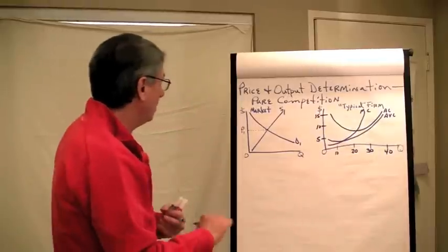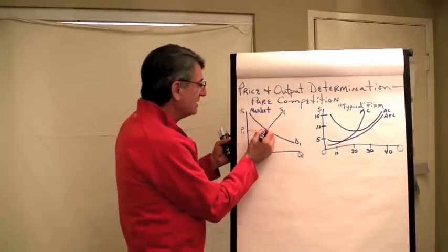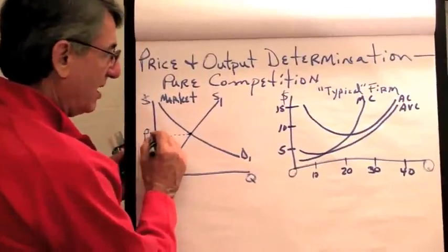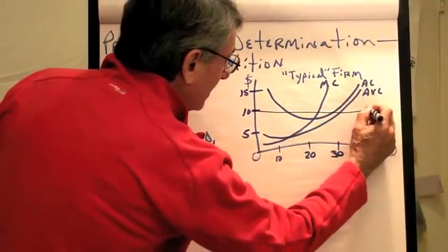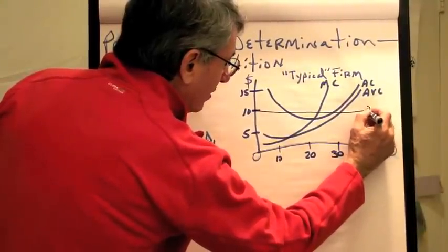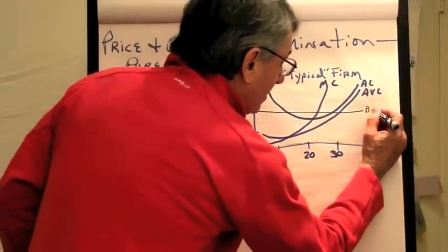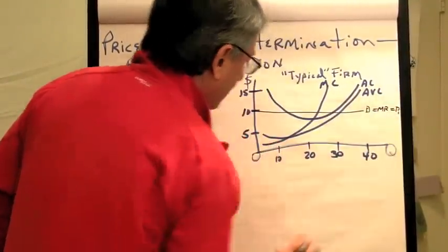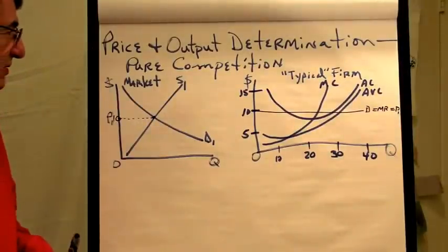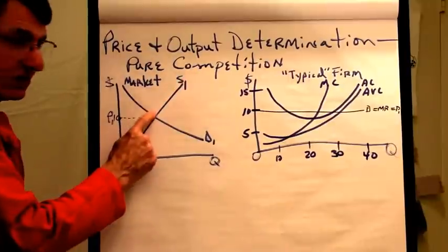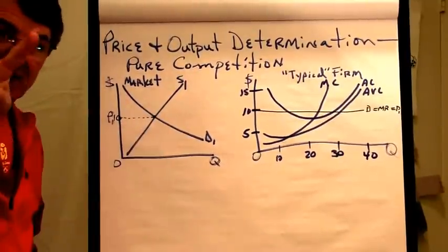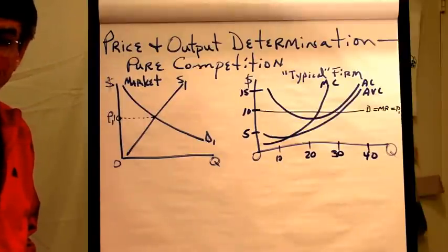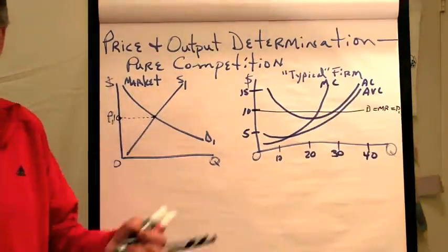Once the market has decided that the price is P1 — let's say this price is $10 — then this becomes the demand curve to each firm in this industry. It's also the marginal revenue curve, and it's price. Each firm in a purely competitive market is a price taker. The second characteristic is free entry and exit of firms, and the third is the product is homogeneous — each firm makes a perfect substitute for every other firm.